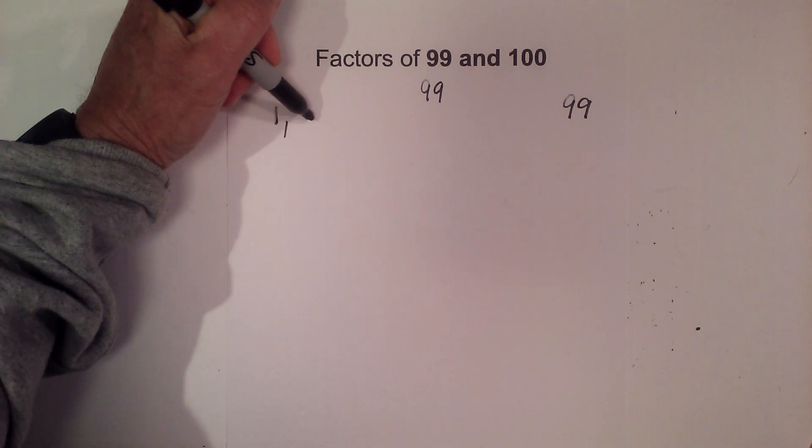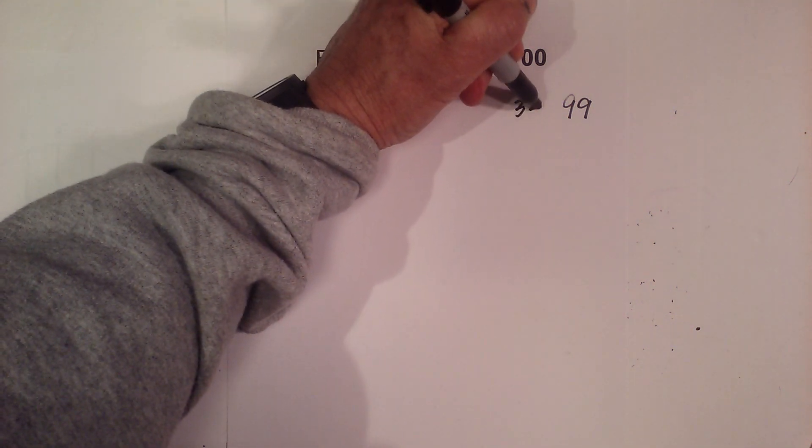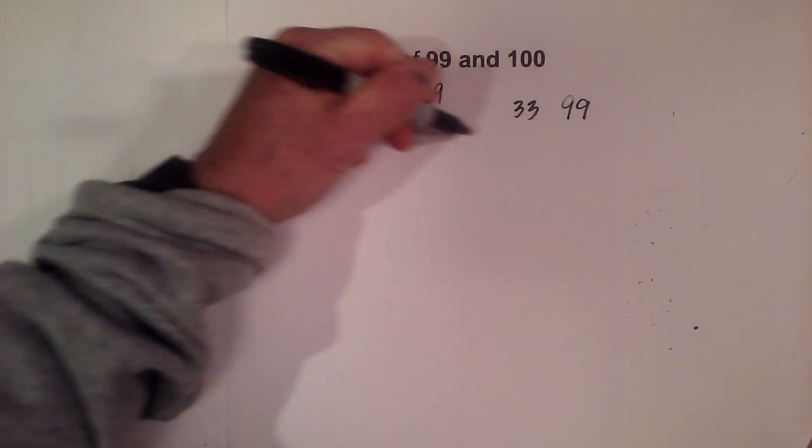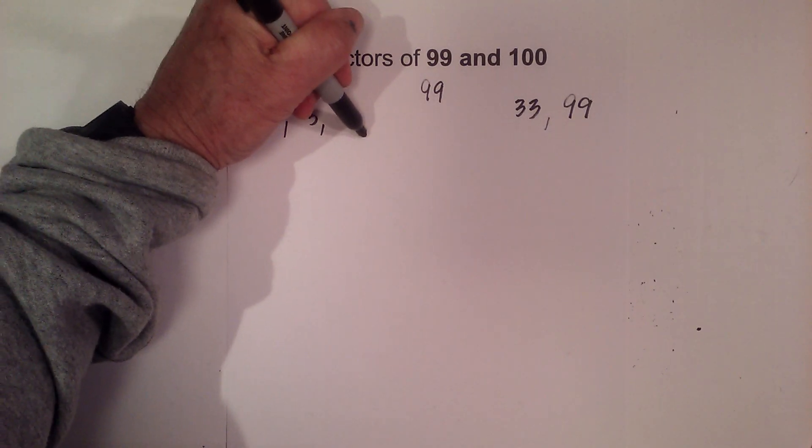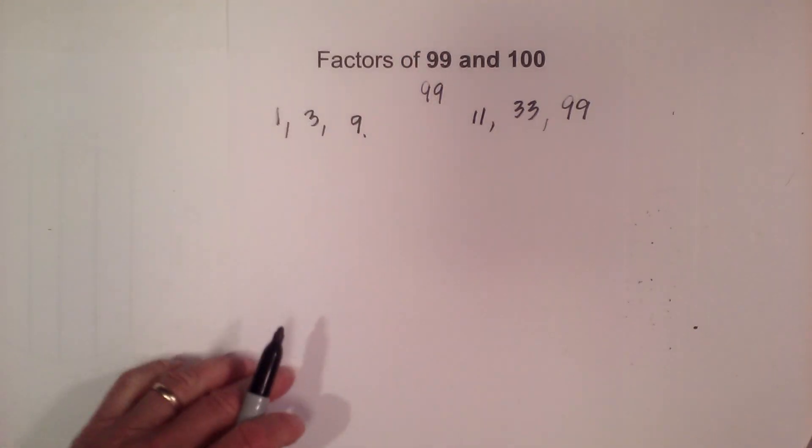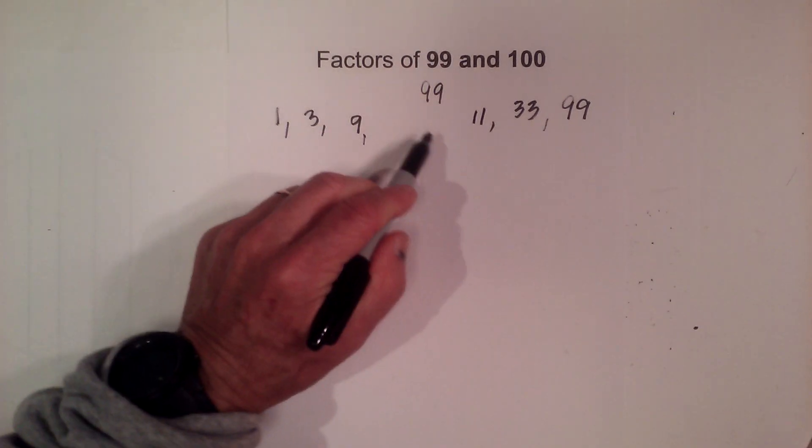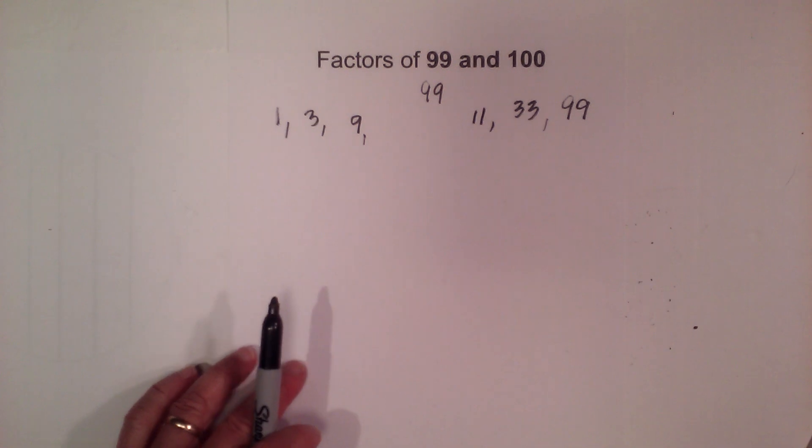3 times 33 equals 99 and then why don't we try 9 times 11. And so 10 is in between and 10 does not go into 99 so I'm finished.